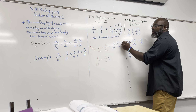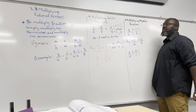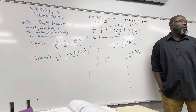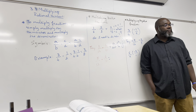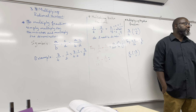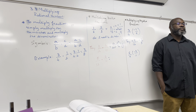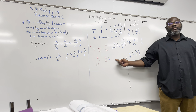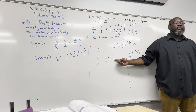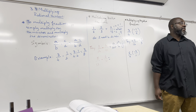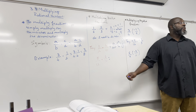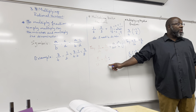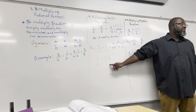Now we're going to first talk about how to multiply positive fractions — all positive. So if I have one over six times two over three, that becomes two over 18, because it's one times two over six times three. Now what do I need to do? I have two over 18 — am I done? No — simplify.